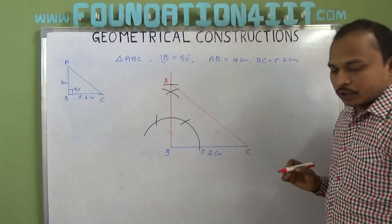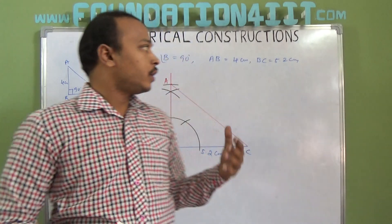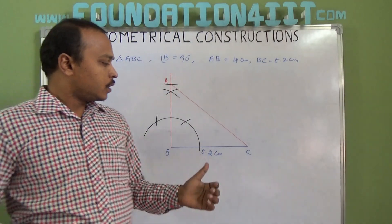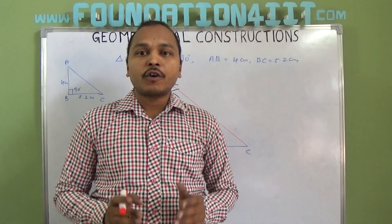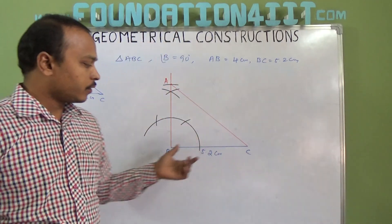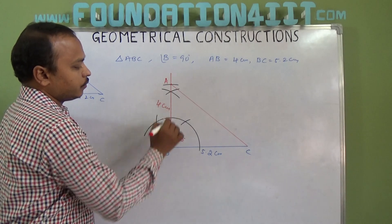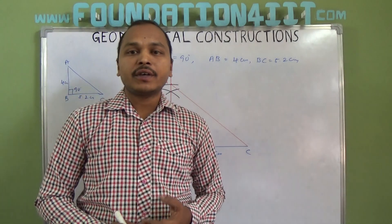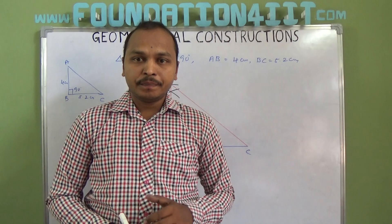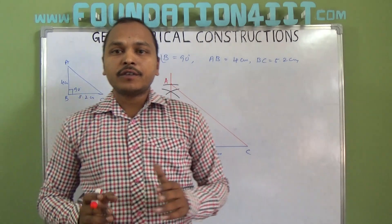Join A and C. This is a right-angled triangle. So whenever the sides forming the right angle are given, first you take one side, construct 90 degrees, then measure the other side—4 centimeters according to the question. This way you can construct a right-angled triangle when the sides forming the right angle are given.